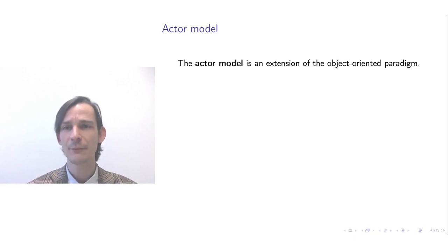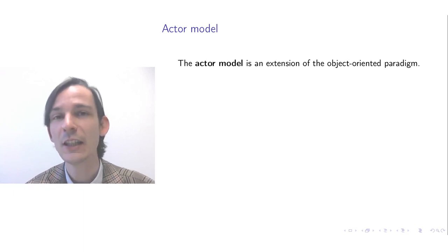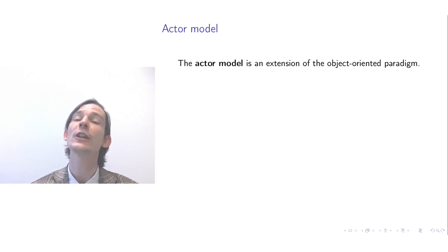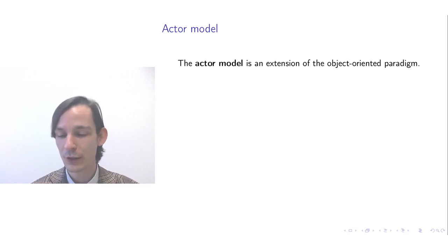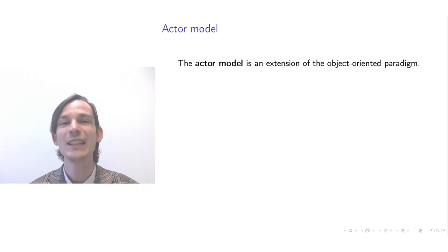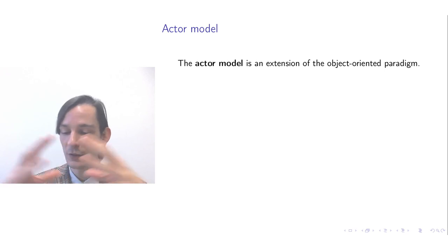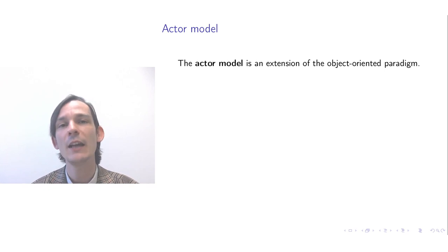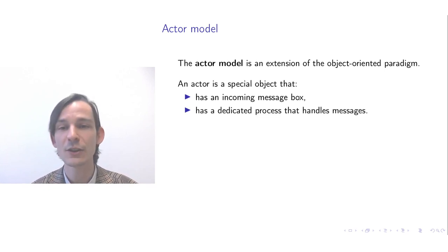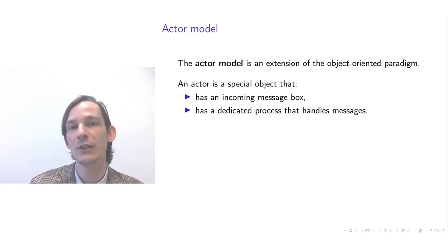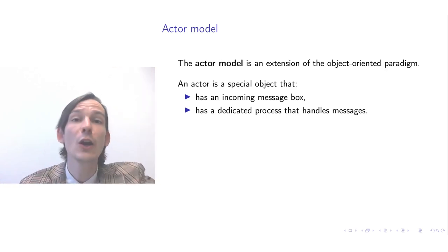Now let's consider a programming paradigm for working with distributed systems — the actor model. The actor model is an extension of the object-oriented paradigm. In object-oriented programming, objects live in a shared memory space, but in a distributed system there is no globally shared memory. Instead, we have special kinds of objects called actors, where the memory needed is stored in one particular process, and actors cannot directly read from the memory of other actors because they could be located on the other side of the globe.